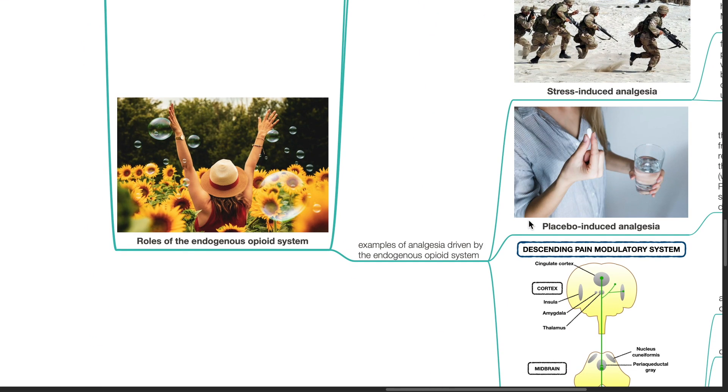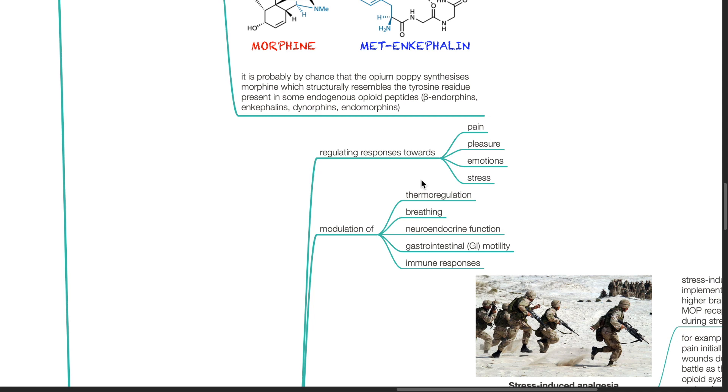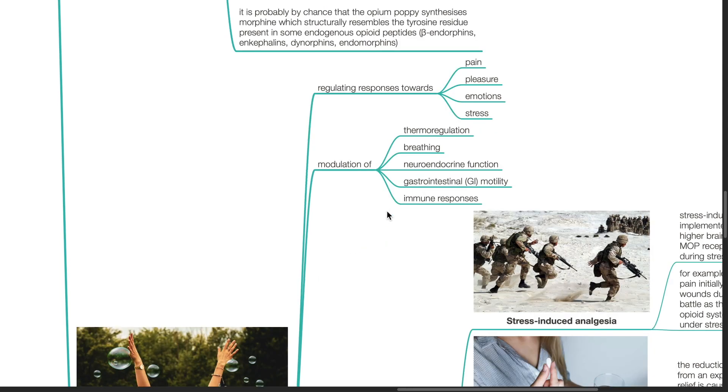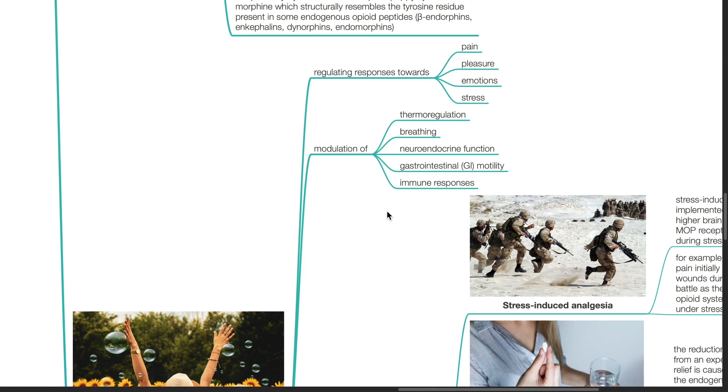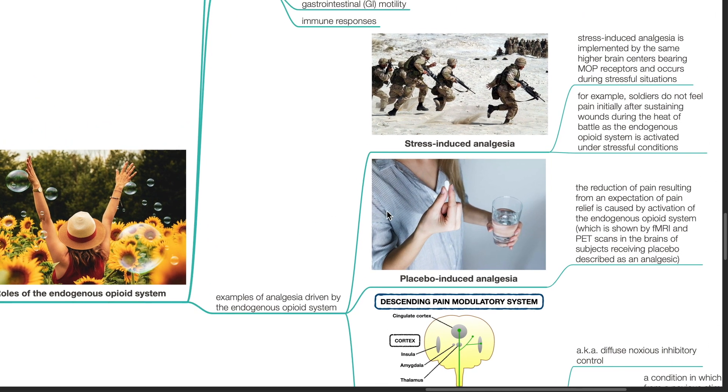Roles of the endogenous opioid system: It is important in regulating responses towards pain, pleasure, emotions, and stress. It is involved in the modulation of thermoregulation, breathing, neuroendocrine function, GI motility, and immune responses. Examples of analgesia driven by the endogenous opioid system include stress-induced analgesia, placebo-induced analgesia, and conditioned pain modulation.